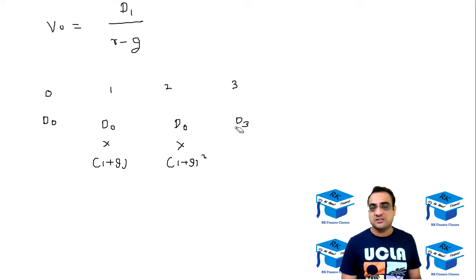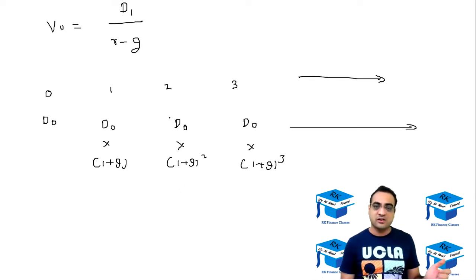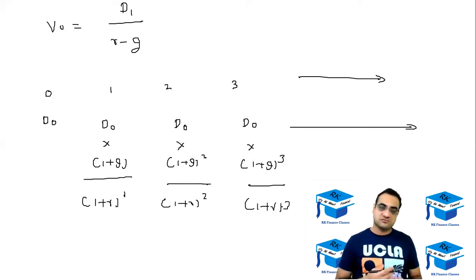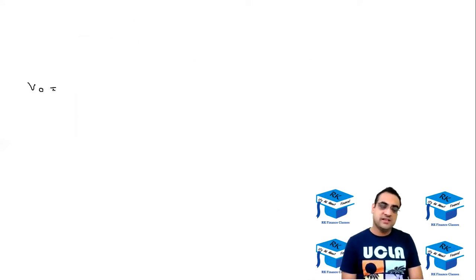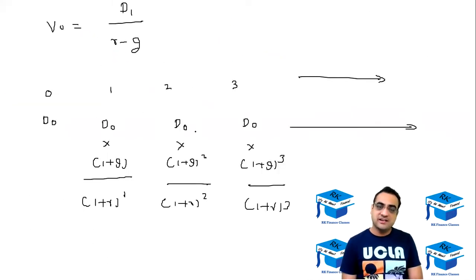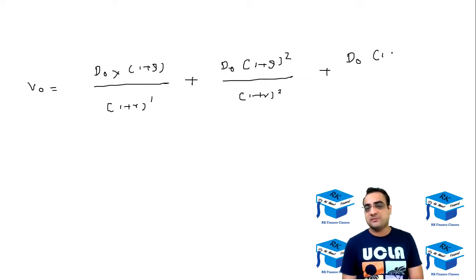D3 would be D2 into one plus g, and D2 is already D0 into one plus g squared, so one more one plus g makes it one plus g cubed, and this goes on and on. Now we take each term back to present value: divided by one plus r to the one, divided by one plus r to the two, divided by one plus r to the three, and so on. So V0 equals D0 into one plus g upon one plus r to the one, plus D0 into one plus g squared upon one plus r to the two, plus D0 into one plus g cubed upon one plus r to the three, and so on.